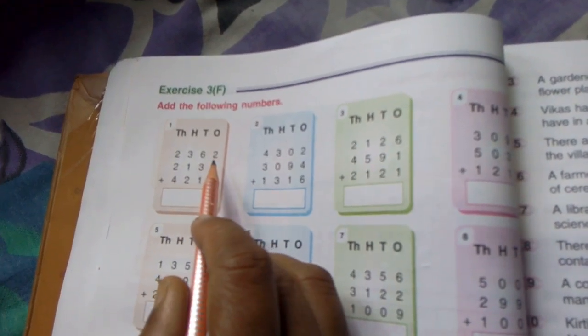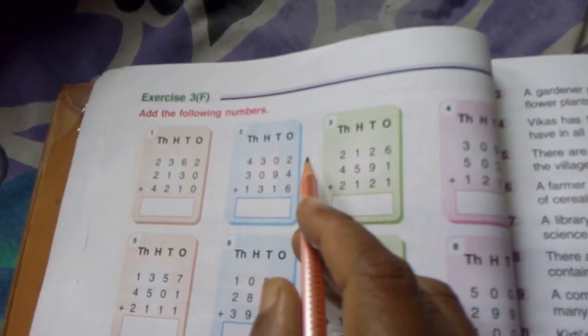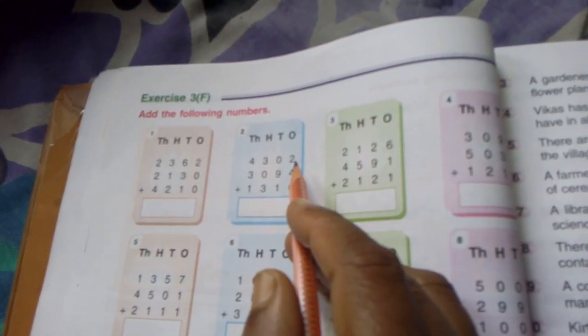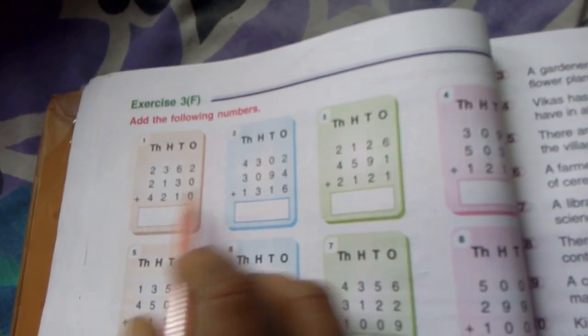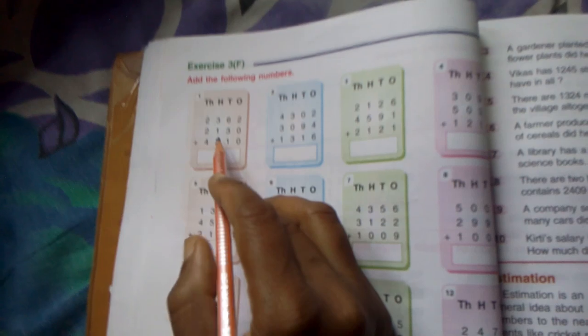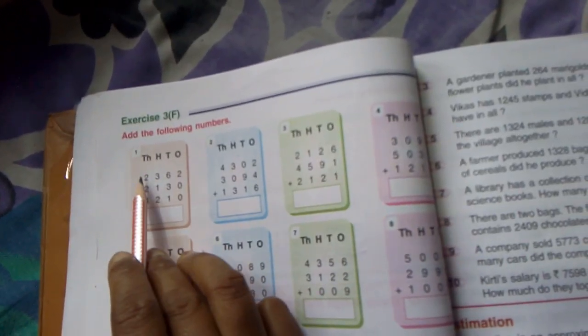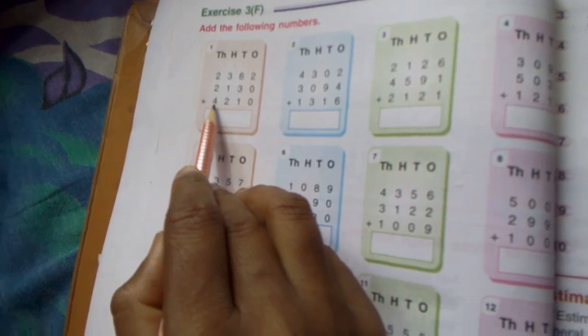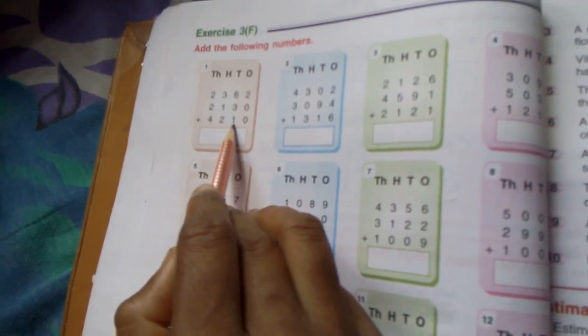Today we will study exercise 3F, page number 50. Add the following numbers. So here we can see there are 3 different 4-digit numbers. See here question number 1: 2362, 2130, 4210.